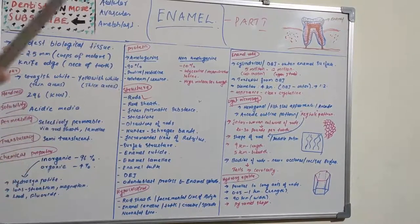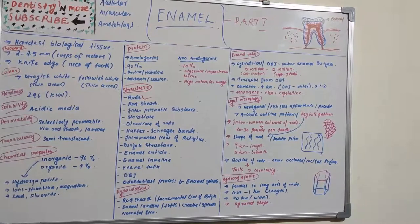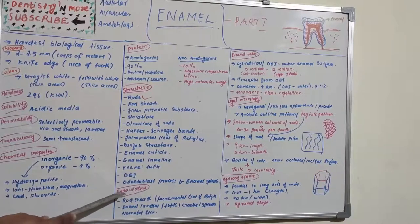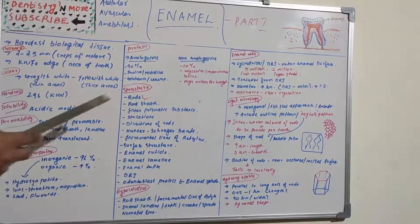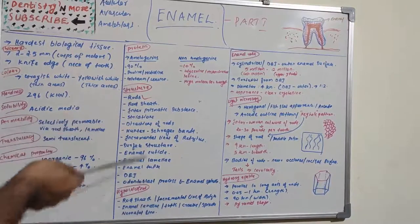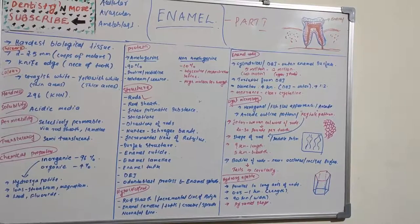There may be a question about hypocalcified structures. Not all enamel structures are hypocalcified — only those that are not properly mineralized. Hypo means below normal, hyper means above normal. The hypocalcified structures of enamel are: rod sheath, incremental lines of Retzius, enamel lamellae, enamel tufts, enamel cracks, enamel spindles, and neonatal lines.